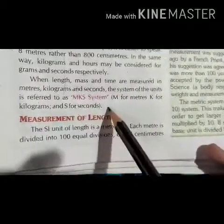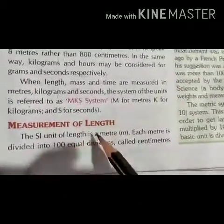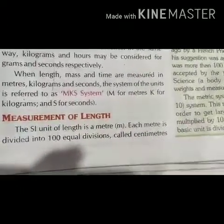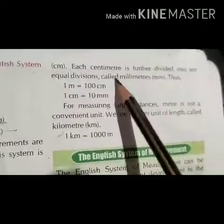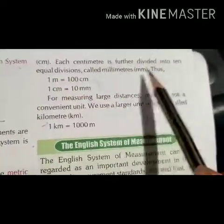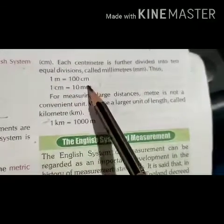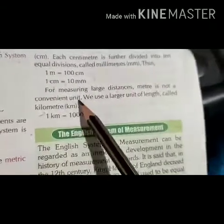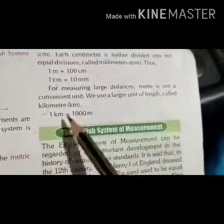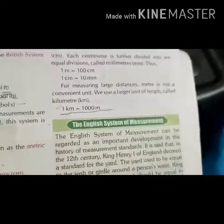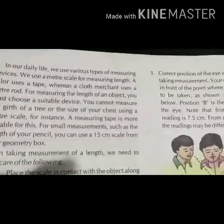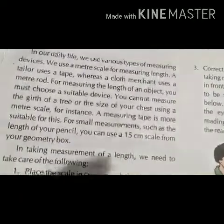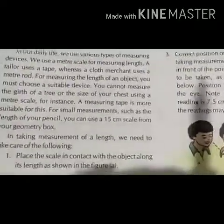The SI unit of length is the meter (m). Each meter is divided into 100 equal divisions called centimeters, and each centimeter is further divided into 10 equal divisions called millimeters. One meter equals 100 centimeters; one centimeter equals 10 millimeters. For large distances, one kilometer equals 1000 meters. In daily life, various measuring devices are used: a meter scale for length, a tailor's tape, and a metal rod used by cloth merchants.